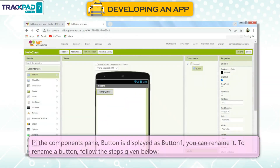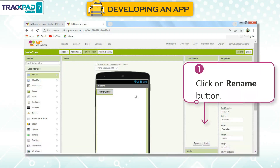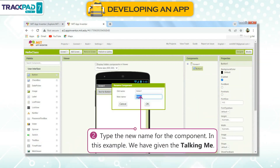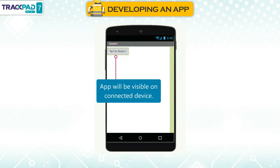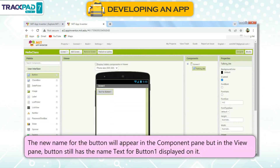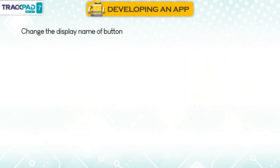Rename the Button: In the Components pane, the button is displayed as Button 1. You can rename it. To rename a button, follow the steps below. First, click on Rename button. Second, type the new name for the component — in this example, we have given it the name 'Talking Me'. Third, click on OK. The app will be visible on the connected device. The new name will appear in the Component pane, but in the View pane, the button still shows the name 'Text for Button 1'.